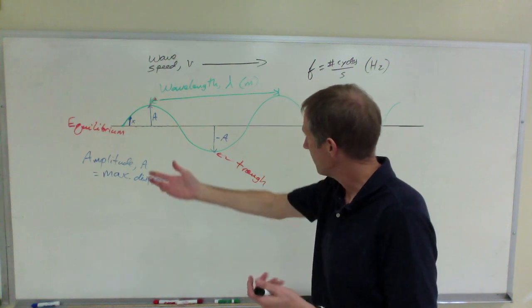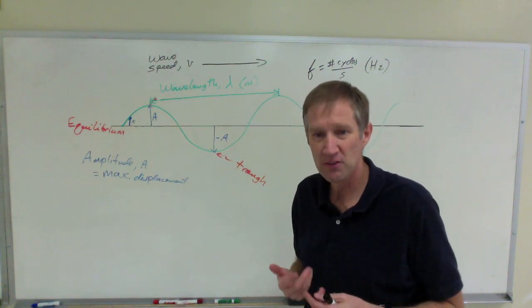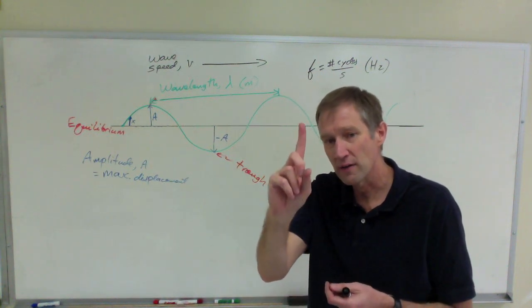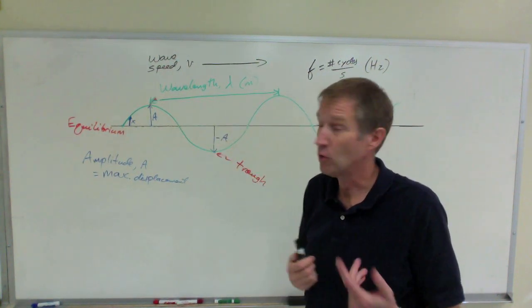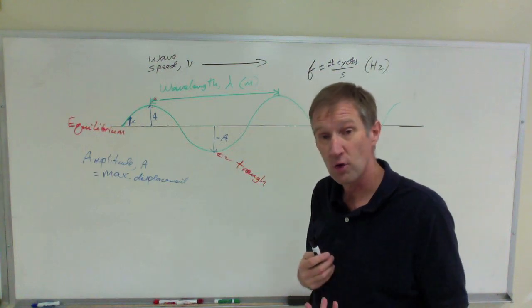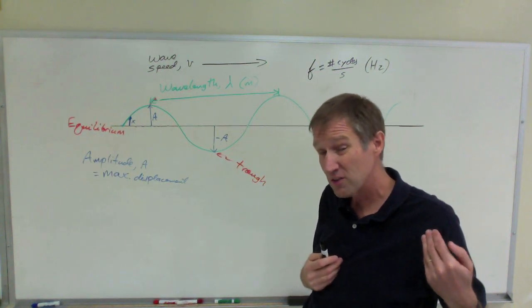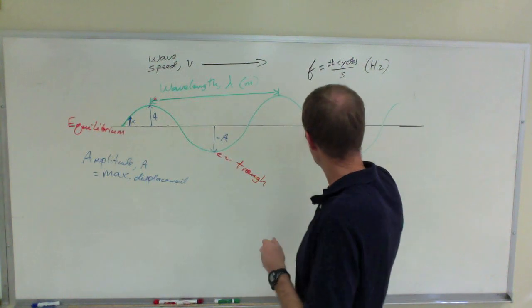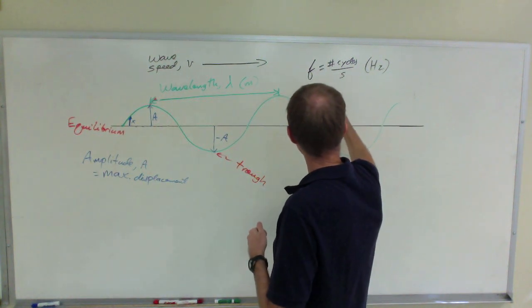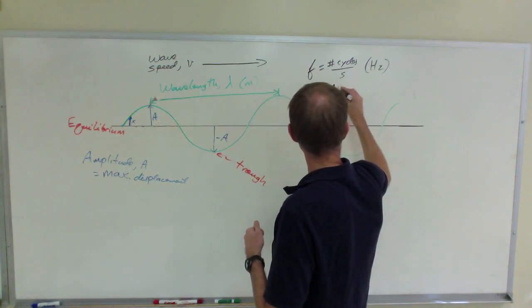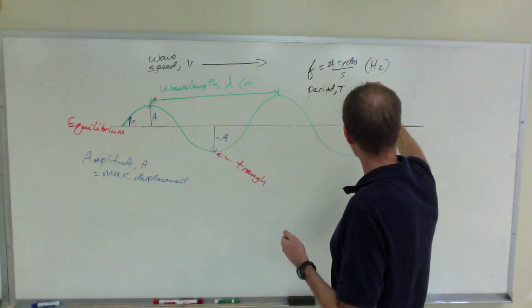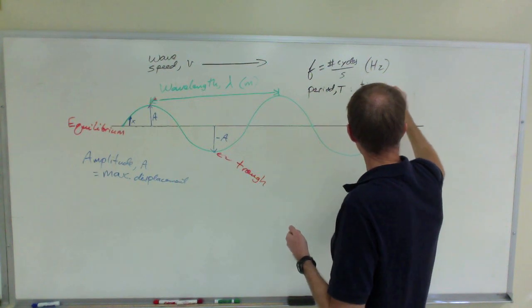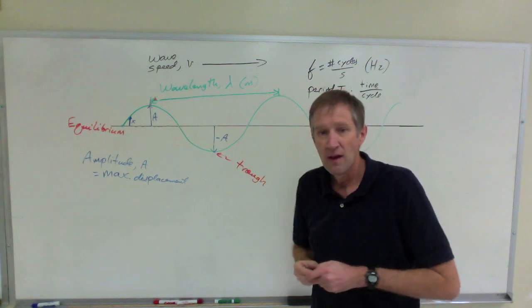if four pass by me per second, then how long does it take one wavelength to pass by? Well, it would be the reciprocal of that. It would be a quarter of a second. If four pass by in one second, then one of them pass by as in a quarter of a second. And that would be the period of the wave T, all right? That's the time for one cycle, all right? In this case, per one wavelength.